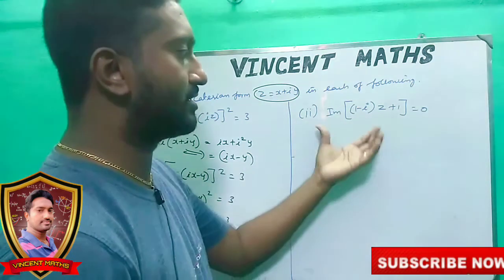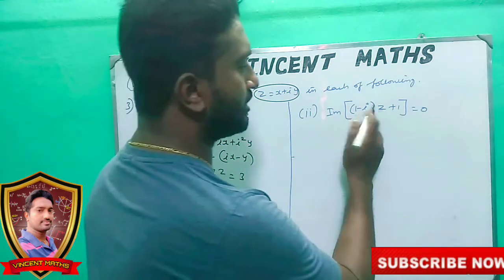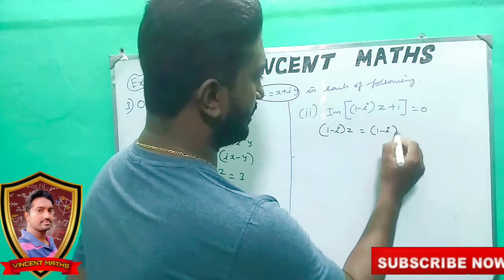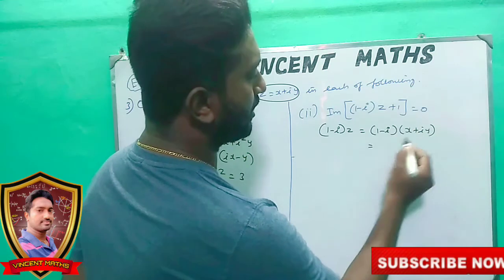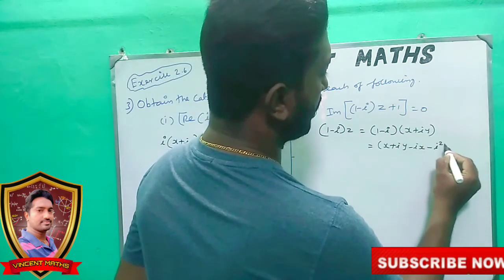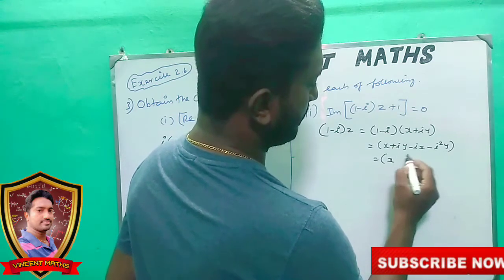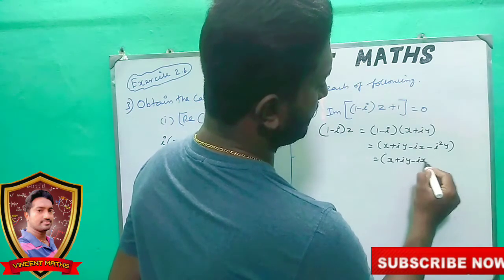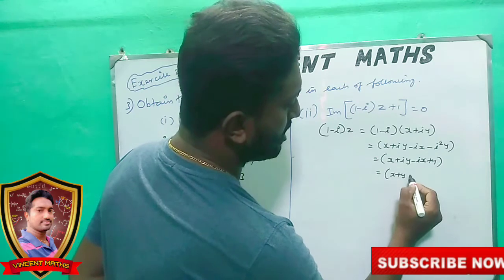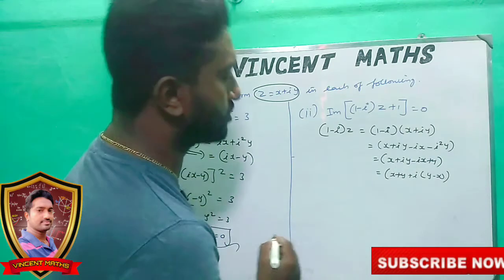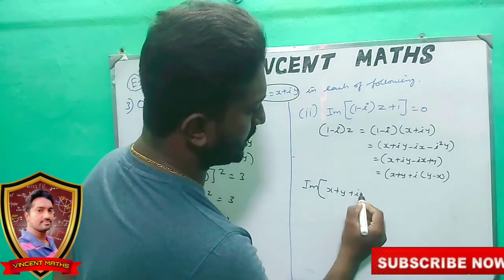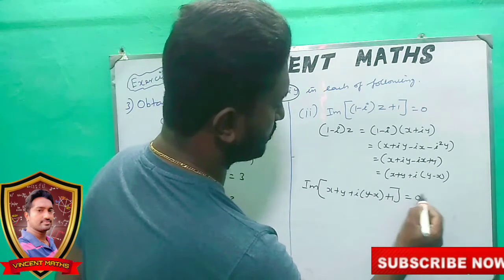Now for the second substitution, we will find the imaginary part. The value is (1 minus i) into z. Substituting z equals x plus iy: (1 minus i) into (x plus iy), which expands to x plus iy minus ix minus i²·y. Since i² is minus 1, this gives x plus y plus i(y minus x), so we have x plus y plus i into (y minus x plus 1) equal to 0.